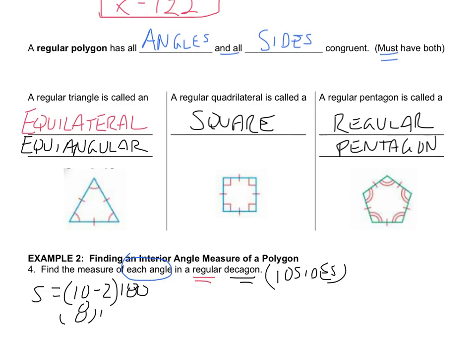Well, ten minus two is 180. And eight times 180 is 1,440 degrees. Well, if I know that this shape is regular, and that is the key, then I know that all of these angles, and there are ten angles, are congruent. So, if I take 1,440 and divide it by ten, that would tell me that every angle in a regular decagon is 144 degrees.